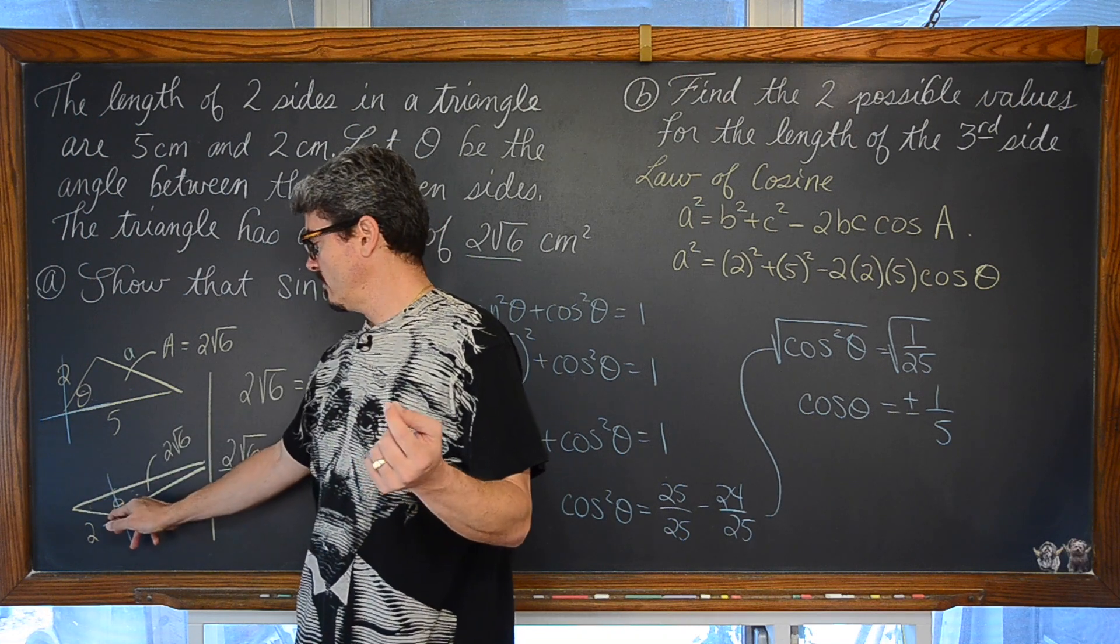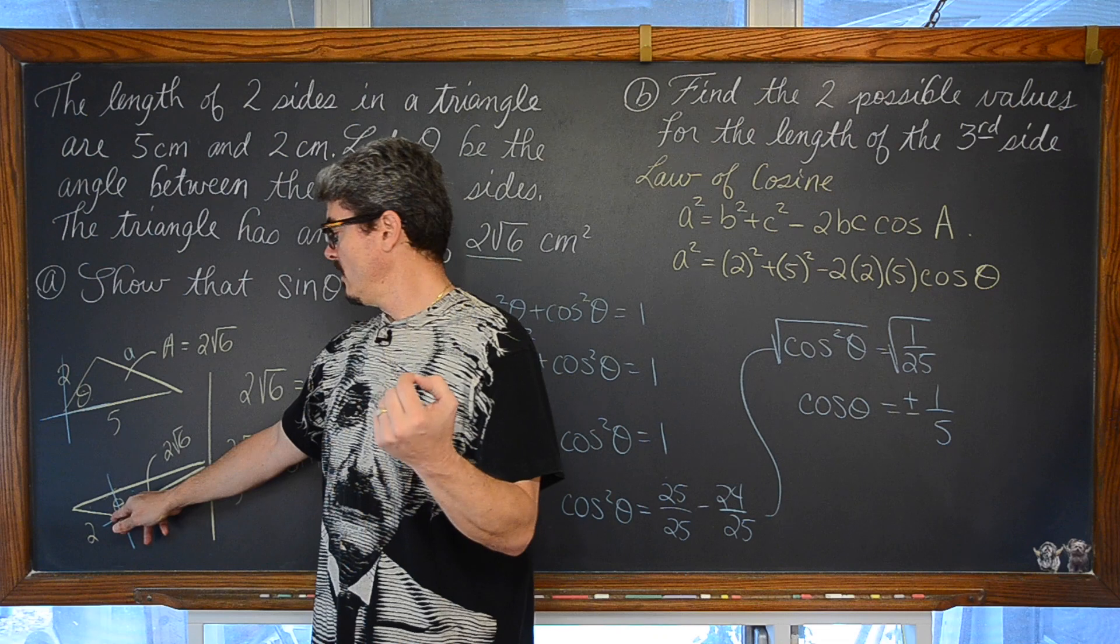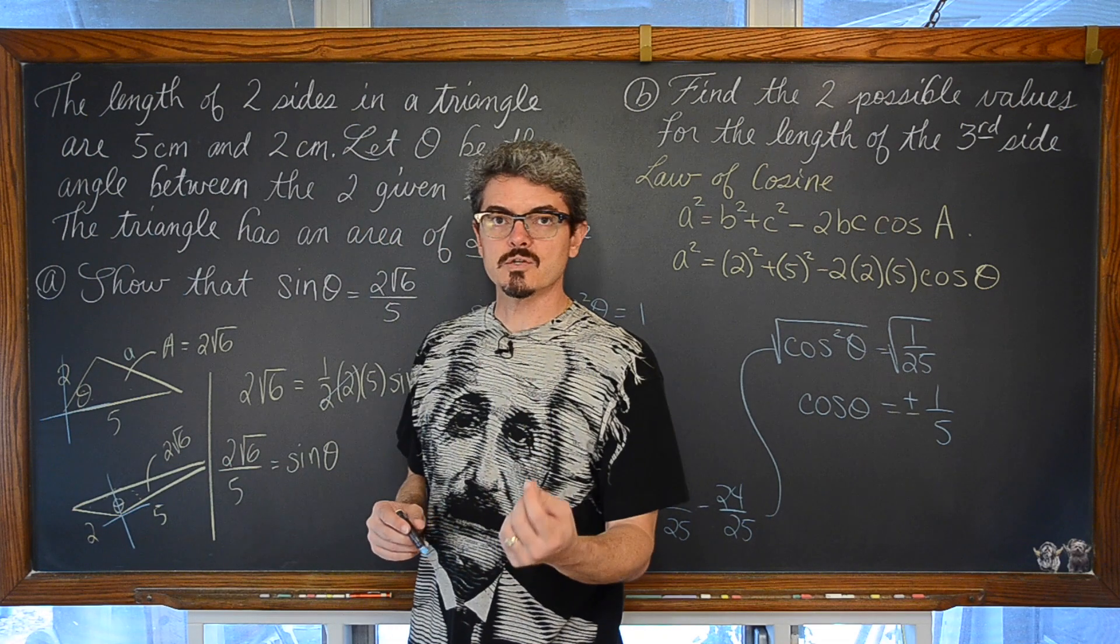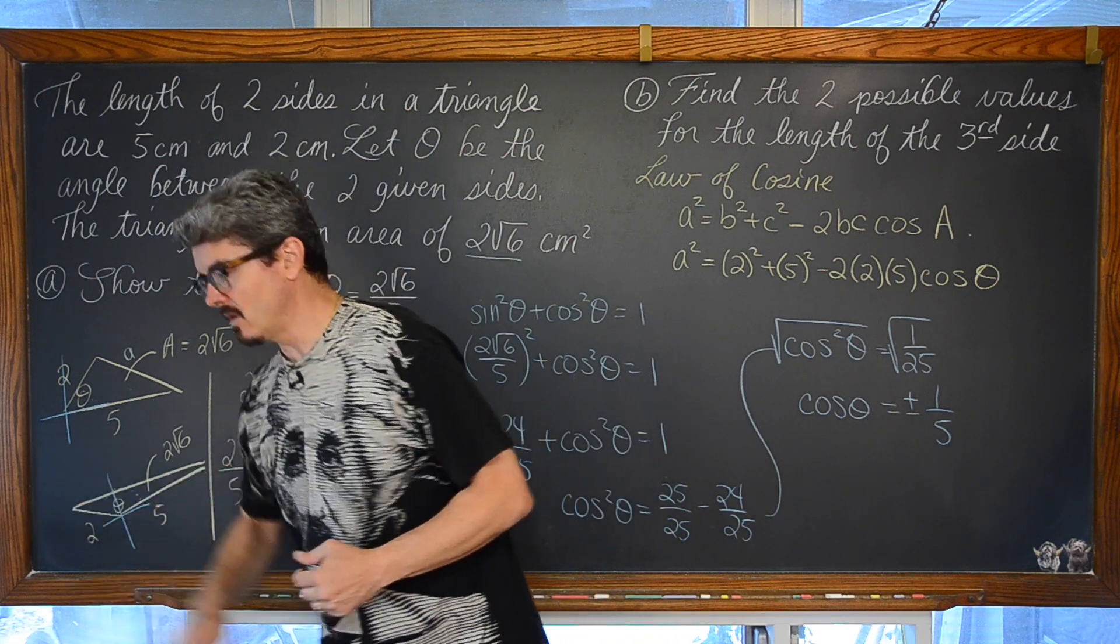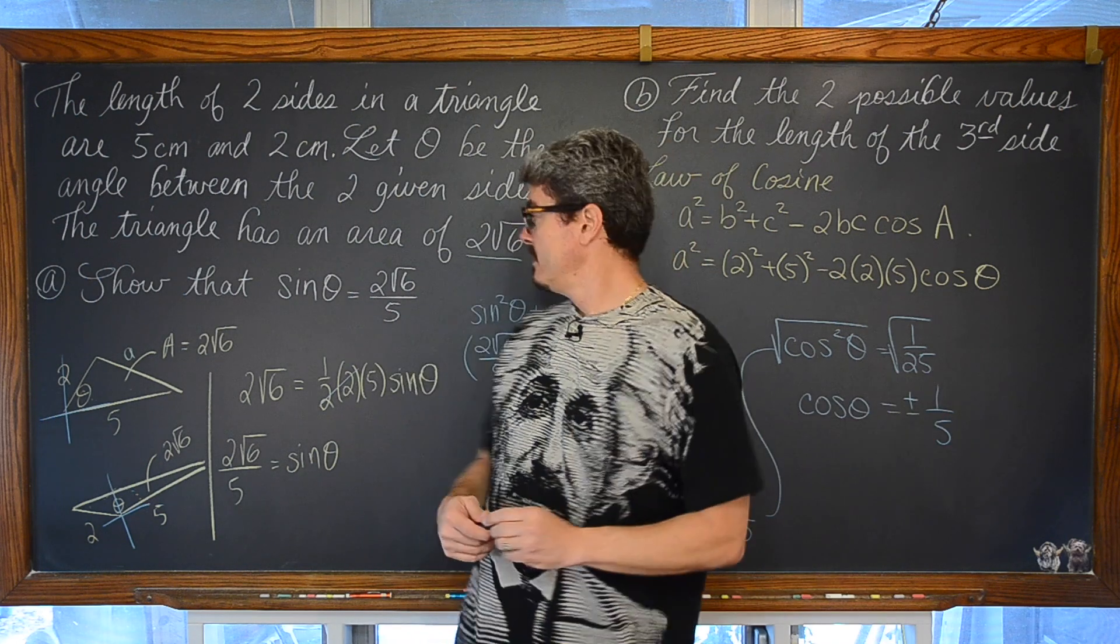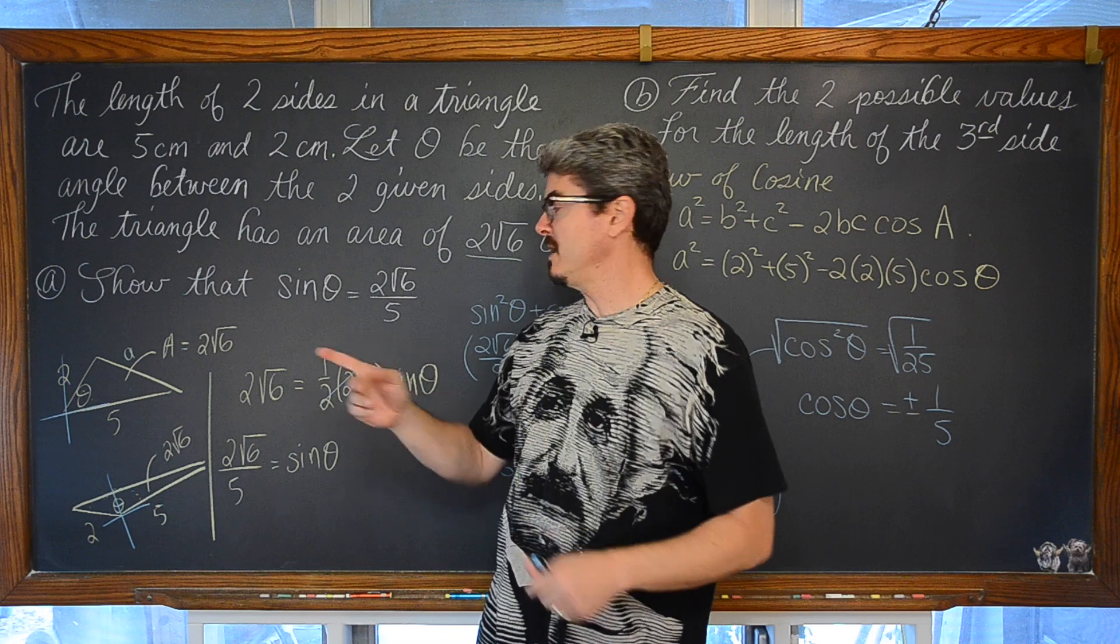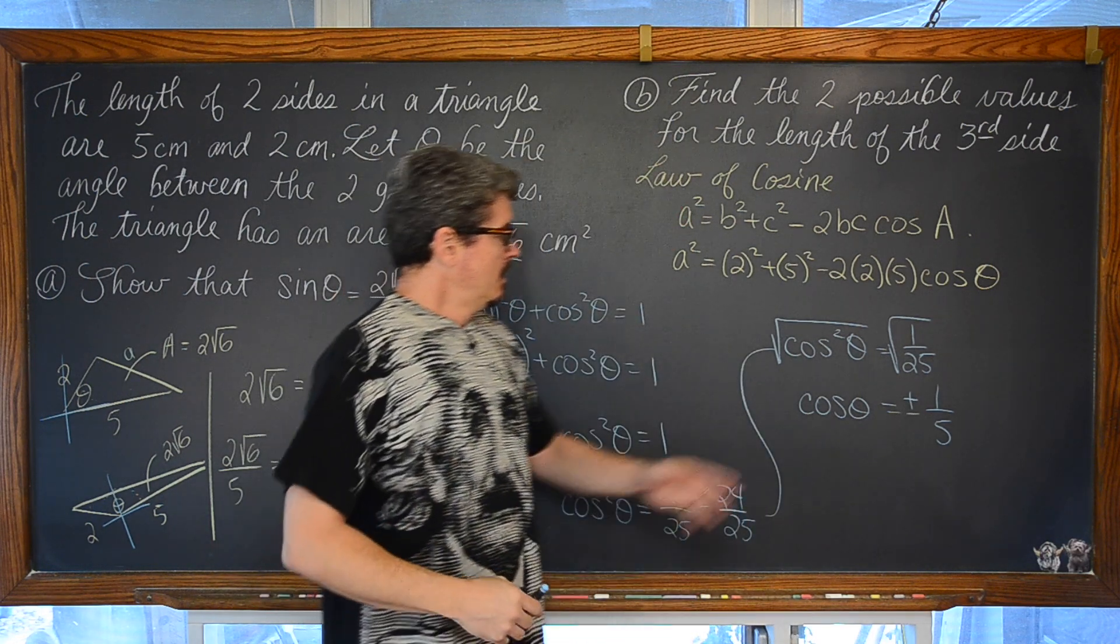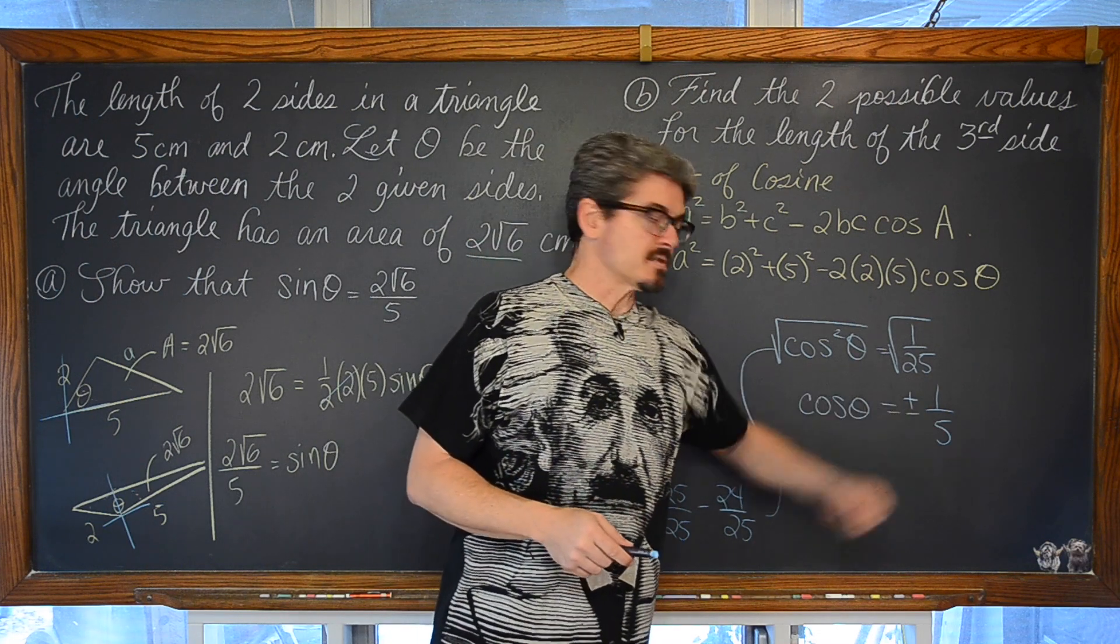In quadrant 2, your sine ratios can still be positive, where the cosine, which is x over r, is negative. So yes, it makes perfect sense that while the sine of theta is 2 square root of 6 over 5, meaning that theta can be in either quadrant 1 or 2, the cosine of that angle measure may potentially be positive or negative.